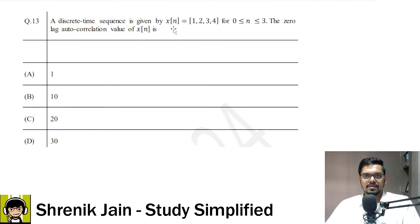A discrete time sequence is given by X of N, which is equal to 1, 2, 3, 4 for N is greater than or equal to 0, less than or equal to 3. The zero lag autocorrelation value of X of N is what? A, B, C or D. The correct answer is option D.